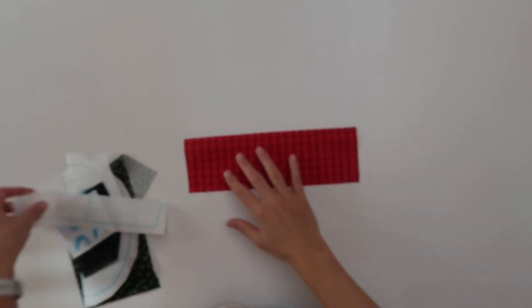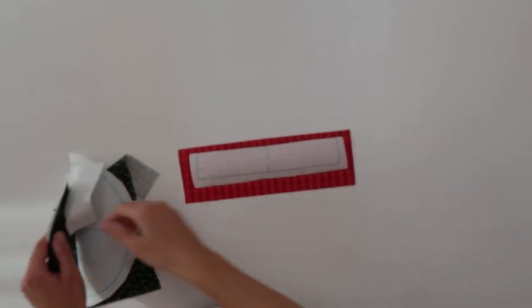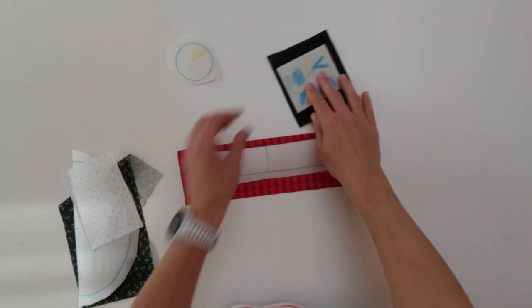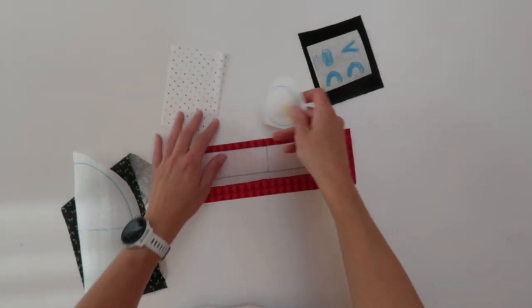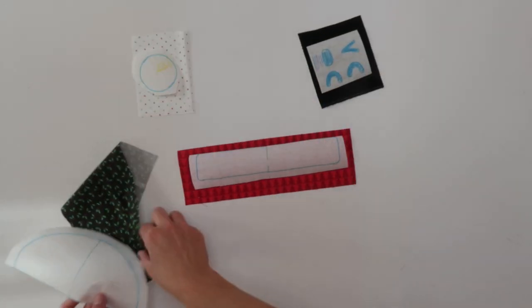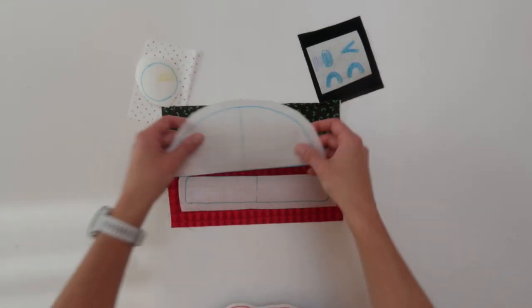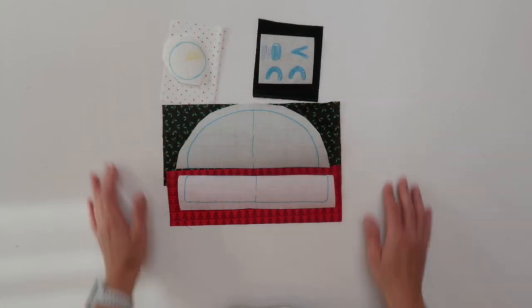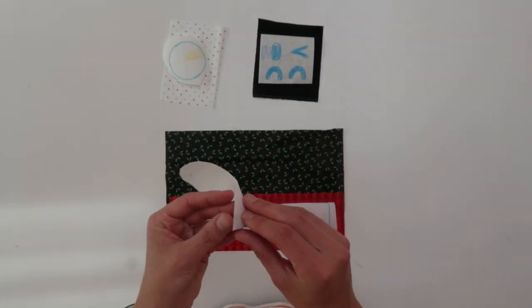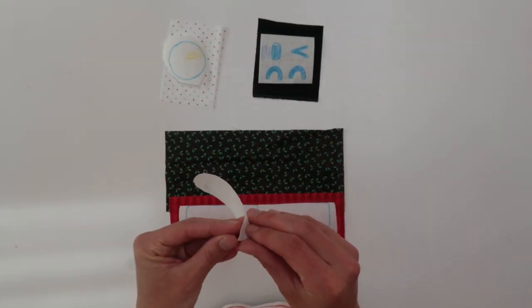So here we have something for the hat and for the eyes, the ball on the hat. This is going to be the hat. Yep, there we go. And with the steam a seam you can just peel off the back layer.